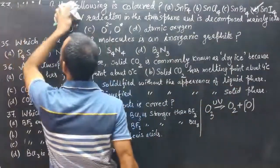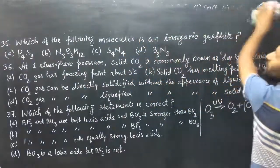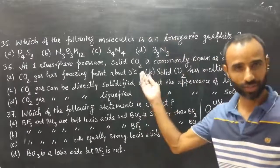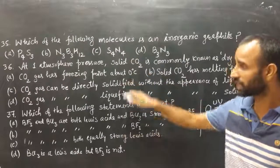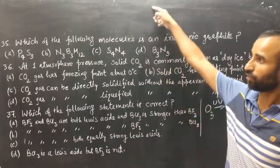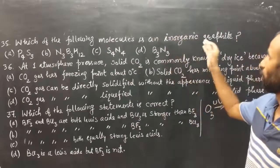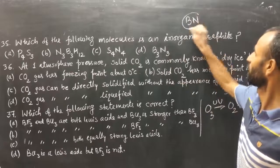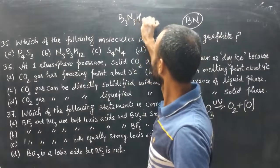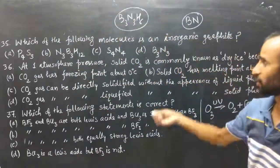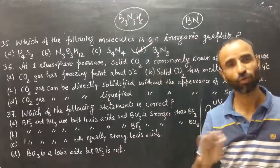Question 35 (from CSIR-SET 2019): which of the following molecule is inorganic graphite? We have already done this. Boron nitride (BN) is inorganic graphite, and B3N3H6 (borazine) is inorganic benzene. So option D (boron nitride, written as BN) is correct.